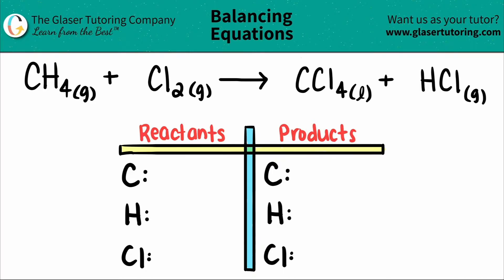Today, we're going to balance the following equation: methane, which is CH4, plus Cl2, chlorine gas. When they react, it will produce or yield CCl4 plus HCl.